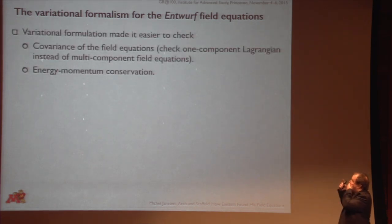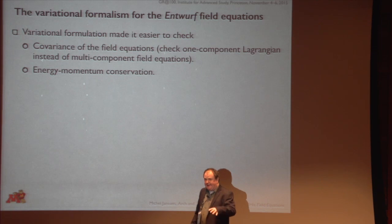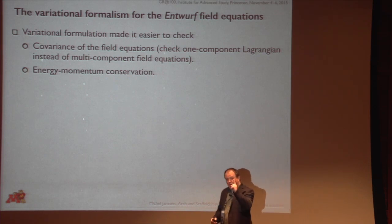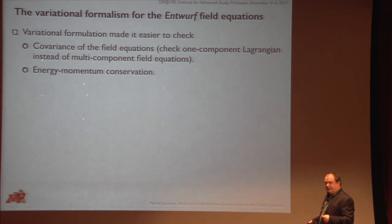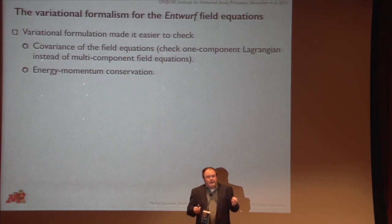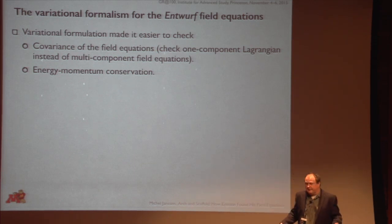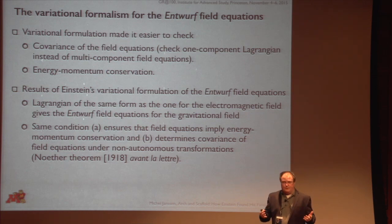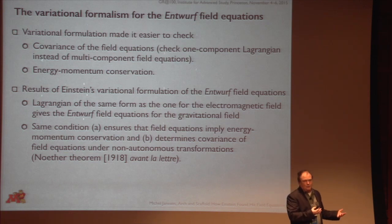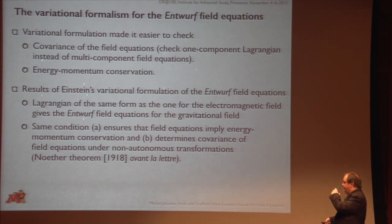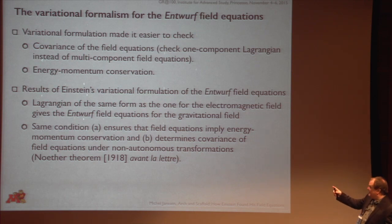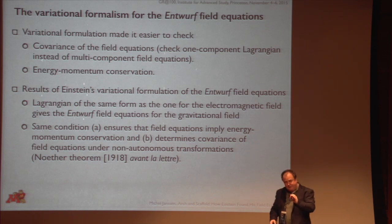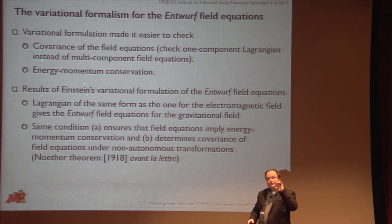Einstein adopts this variational formalism to try and get a handle on the rather intractable covariance properties of these Entwurf field equations. The idea is that it's simpler to check one component — the Lagrangian — than to check all components of the field equations. The variational formalism also gives you a standard way of checking whether energy-momentum conservation is respected. The results of Einstein's application of this are, first, that you get a very physically plausible Lagrangian with exactly the same form as the one for the free Maxwell field. And second — much more interesting — he finds that the same condition that ensures the field equations guarantee energy-momentum conservation is also the condition that describes the range of covariance of these field equations under non-autonomous transformations.